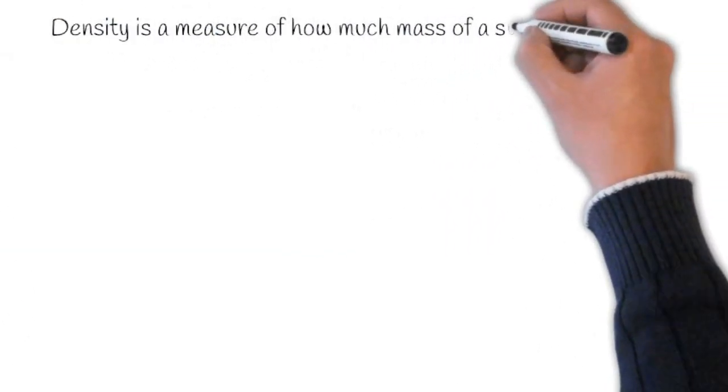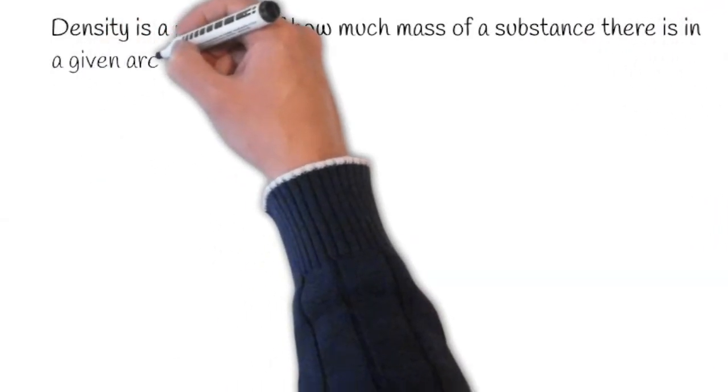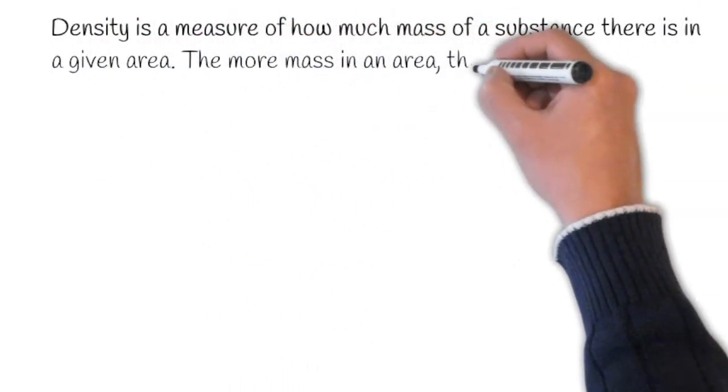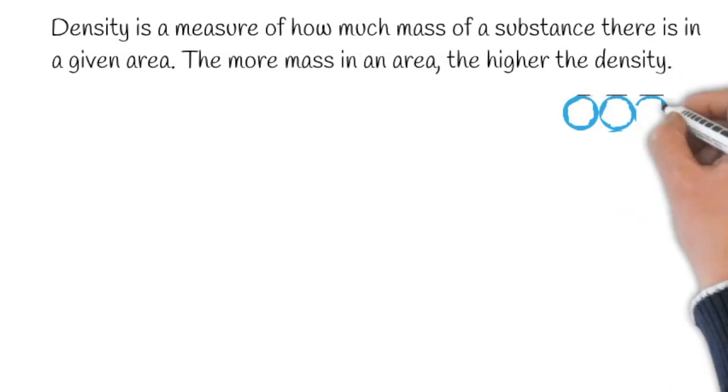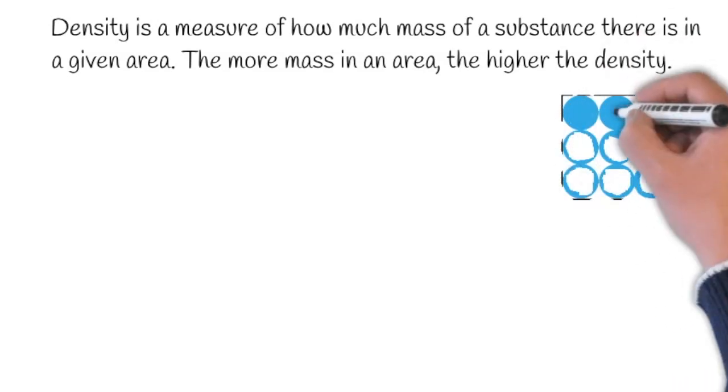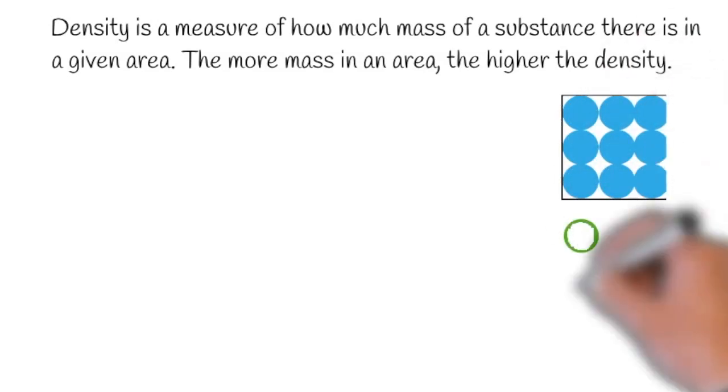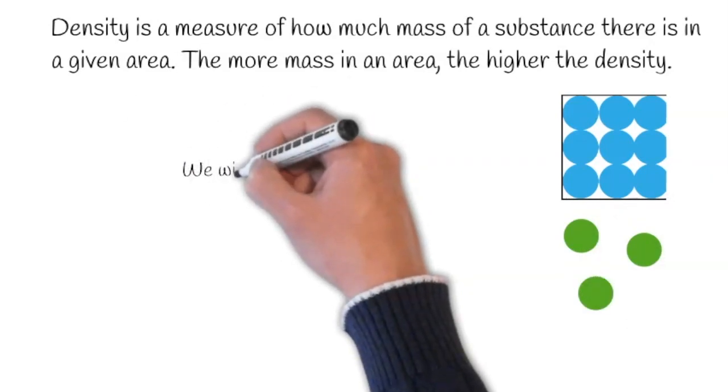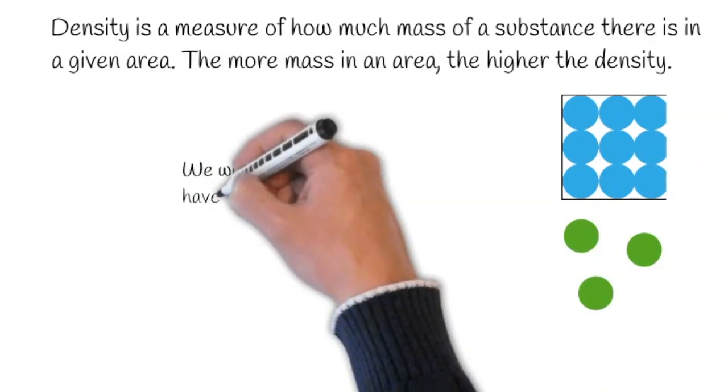Density is a measure of how much mass of a substance there is in a given area. The more mass in an area, the higher the density of the object. Here we have two different objects.